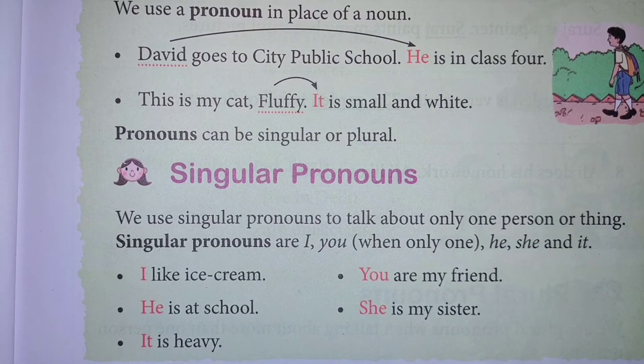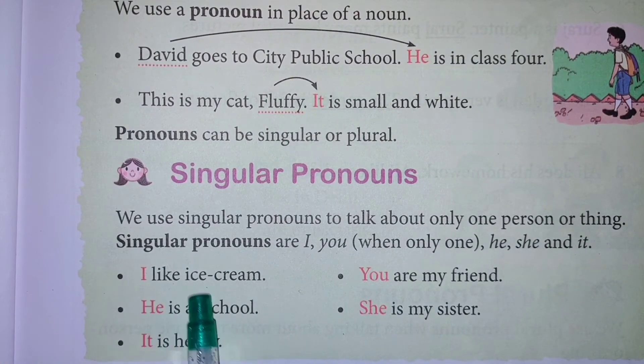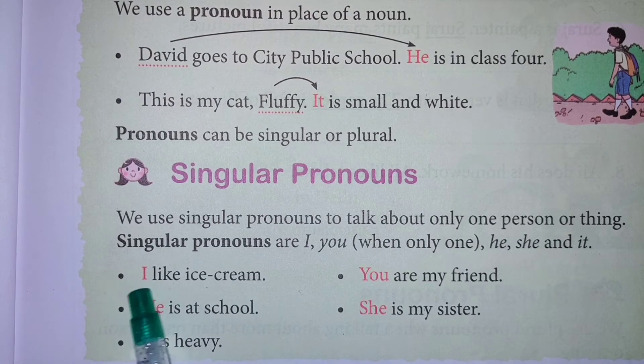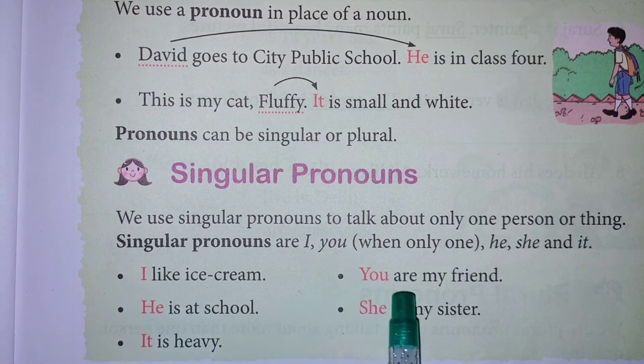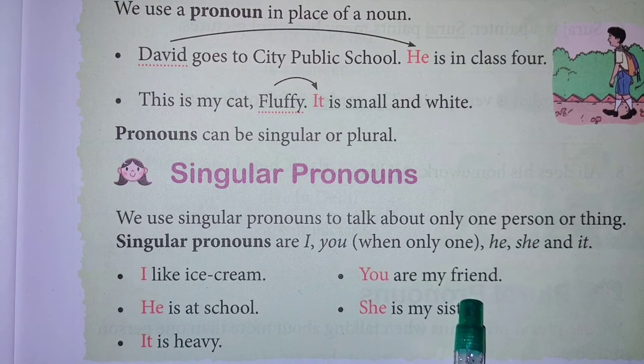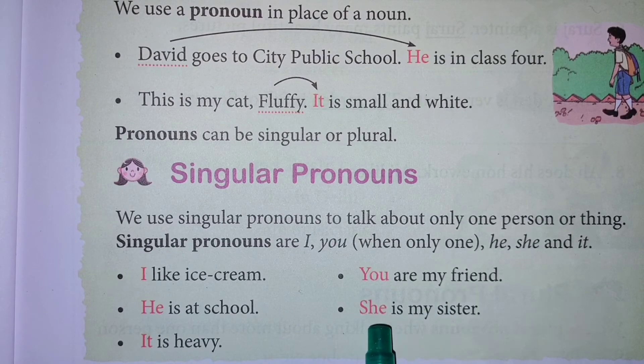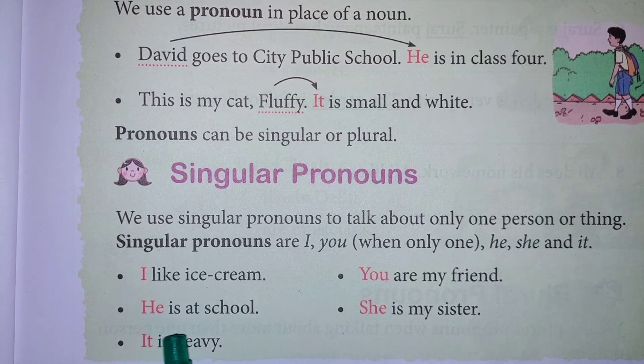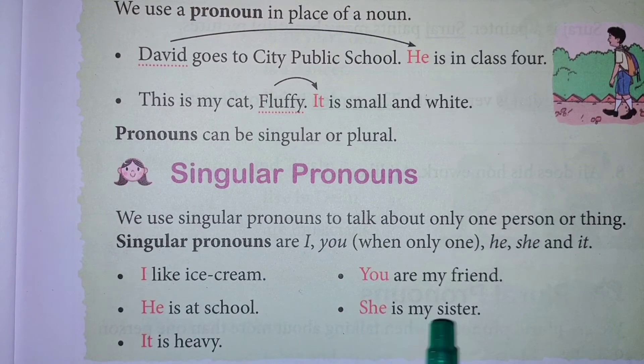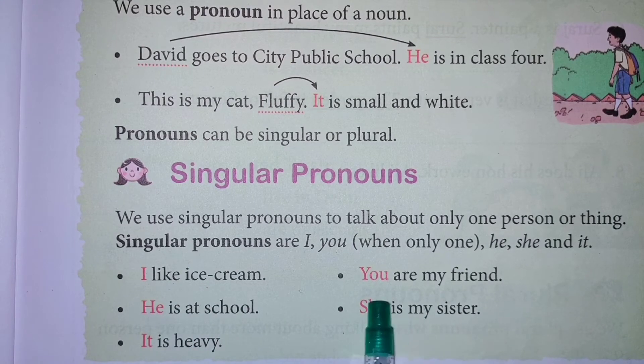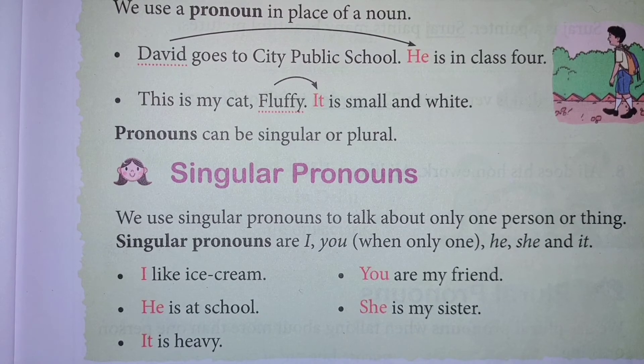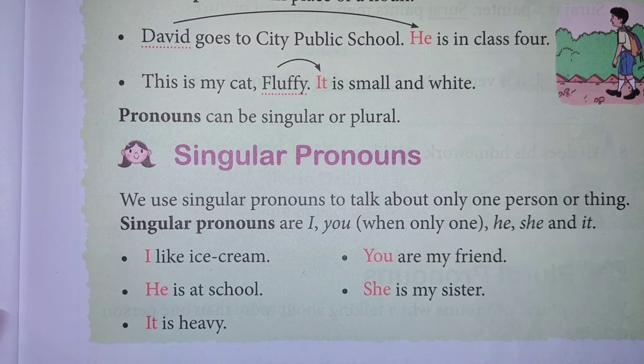Examples: I like ice cream. I is a pronoun. You are my friend. You is a pronoun. He is at school. He is a pronoun. She is my sister. She is a pronoun. That means she is my sister. It is heavy. It is a pronoun.